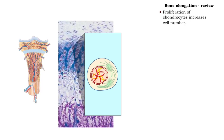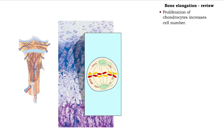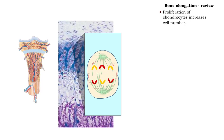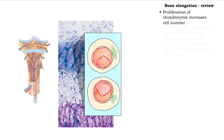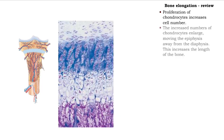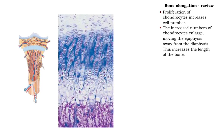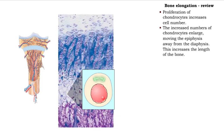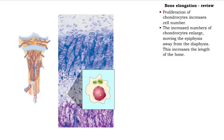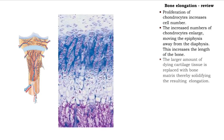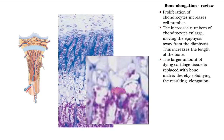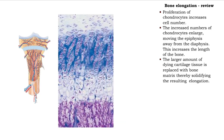Proliferation of chondrocytes increases cell number. The proliferation results in moving the epiphysis away from the diaphysis, increasing the length of the bone. The larger amount of dying cartilage tissue is replaced with bone matrix, solidifying the resulting elongation.